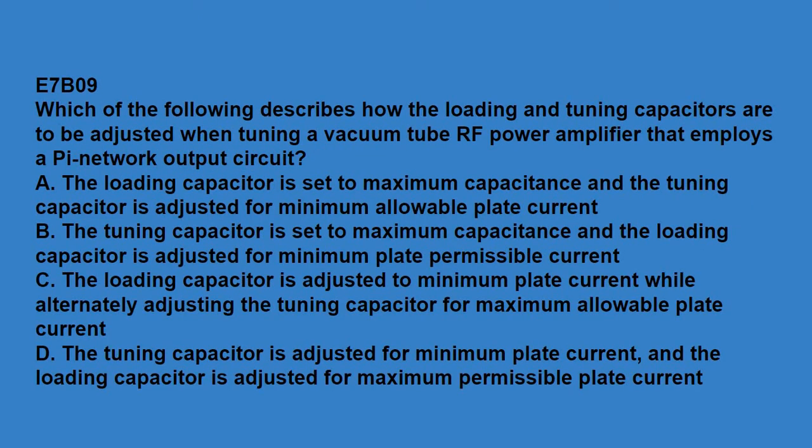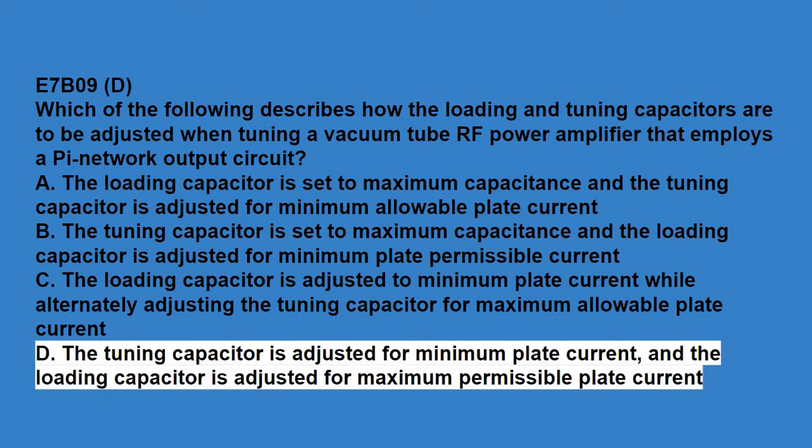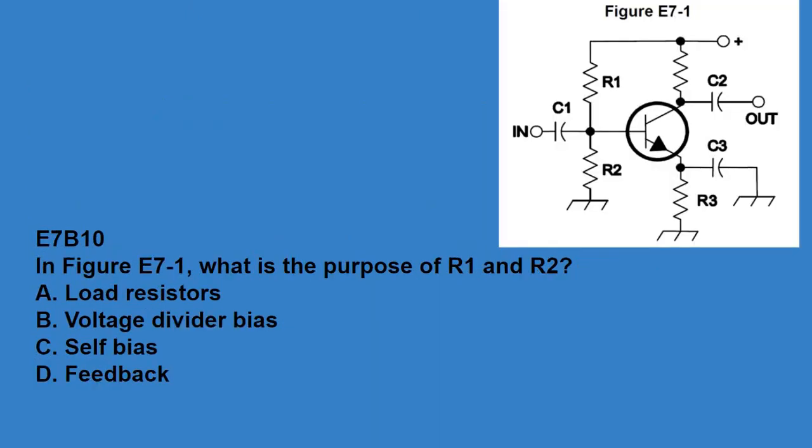E7B09, which of the following describes how the loading and tuning capacitors are to be adjusted when tuning a vacuum tube RF power amplifier that employs a pi network output circuit? The tuning capacitor is adjusted for minimum plate current, and the loading capacitor is adjusted for maximum permissible plate current.